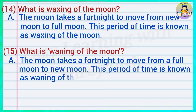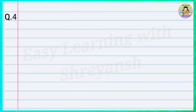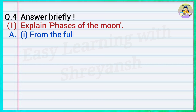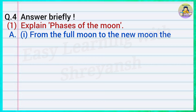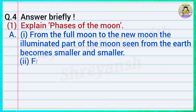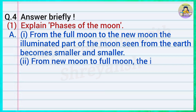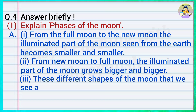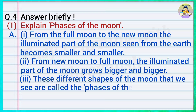Question number four: Answer briefly. One: Explain phases of the moon. Answer: From the full moon to the new moon, the illuminated part of the moon seen from the earth becomes smaller and smaller. From new moon to full moon, the illuminated part of the moon grows bigger and bigger. These different shapes of the moon that we see are called the phases of the moon.